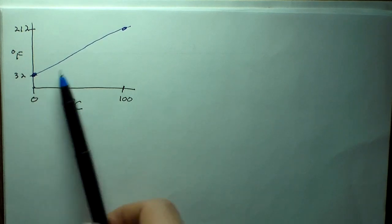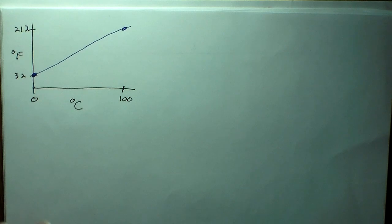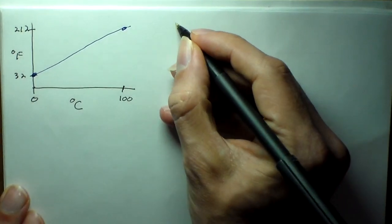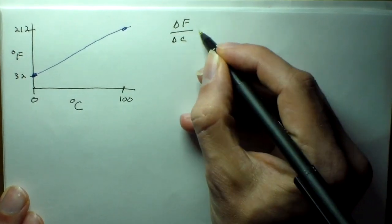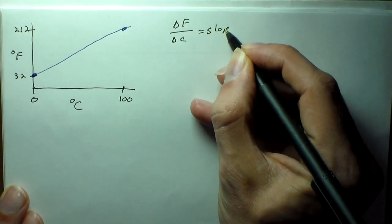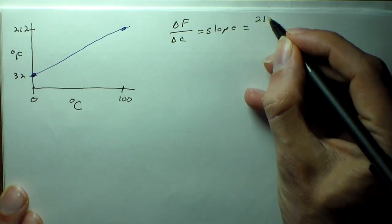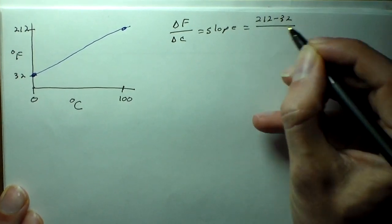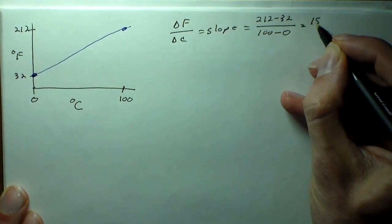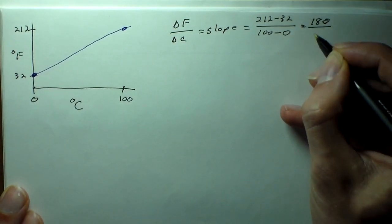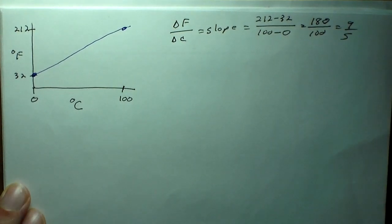We want to figure out what is the equation that describes this relation. We can use the change in Fahrenheit over the change in Celsius as our slope. That's going to be 212 minus 32 over 100 minus 0, so that's 180 over 100, which is 9/5.